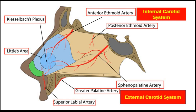You can see here, this is the internal carotid system and this is the external carotid system. The branches of the internal carotid system which supply the nasal septum are the anterior and the posterior ethmoidal arteries, which are branches of the ophthalmic artery. They usually supply the upper part of the septum and the upper part of the lateral wall above the level of the middle turbinate.